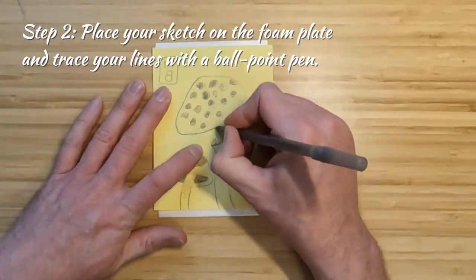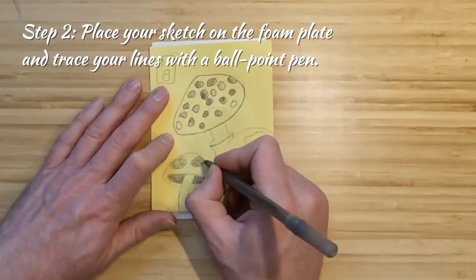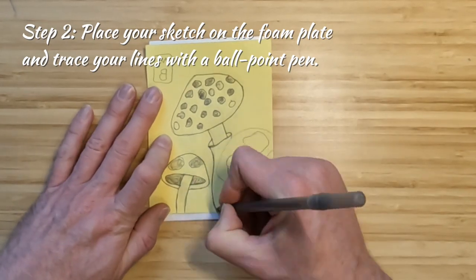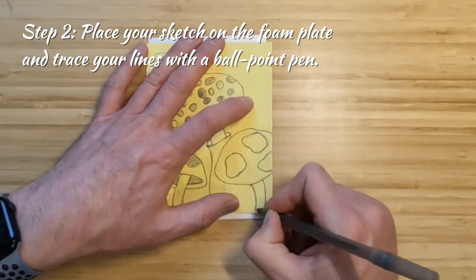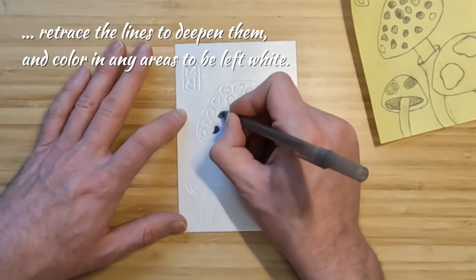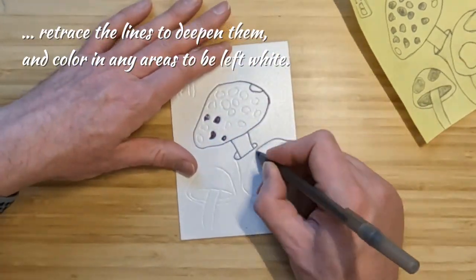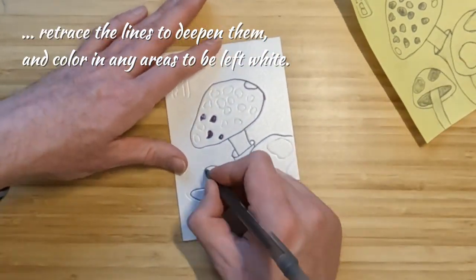Once your sketch is complete, place it on top of your foam plate and trace the lines with a ballpoint pen. Next, lift your paper off and retrace your lines to deepen them in the foam.